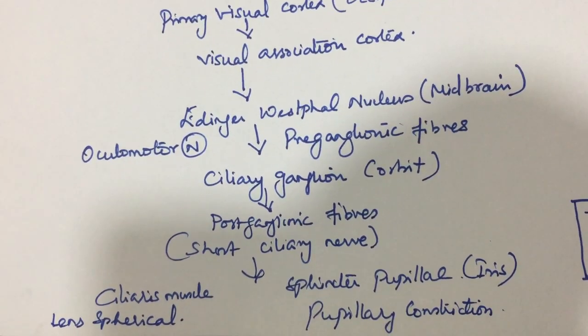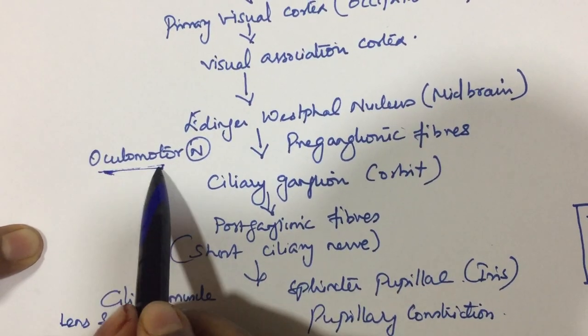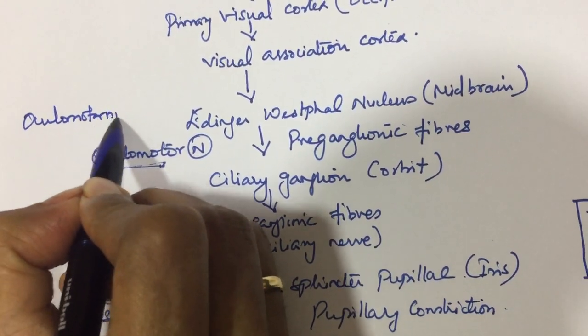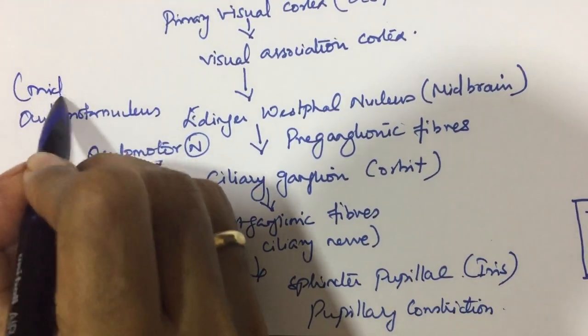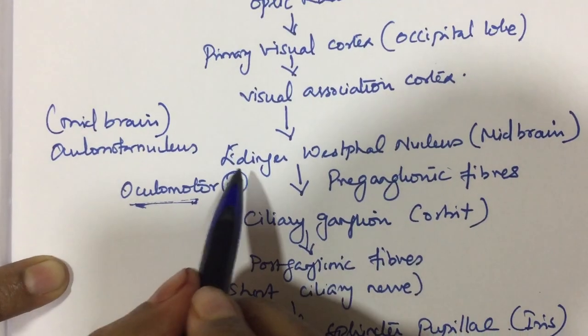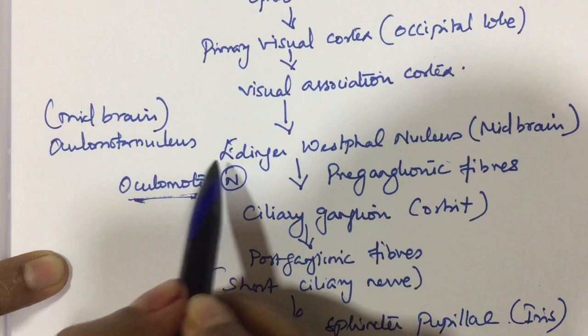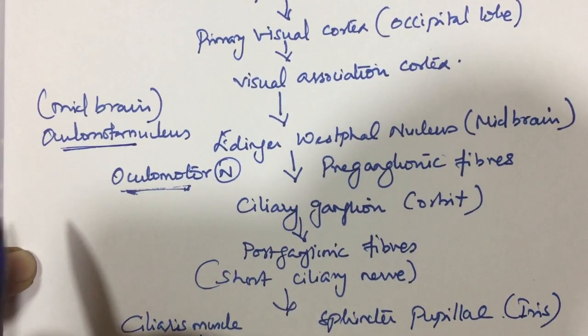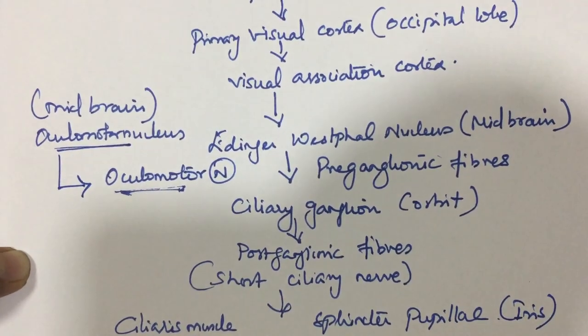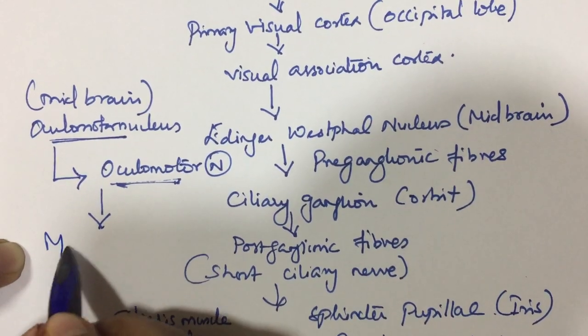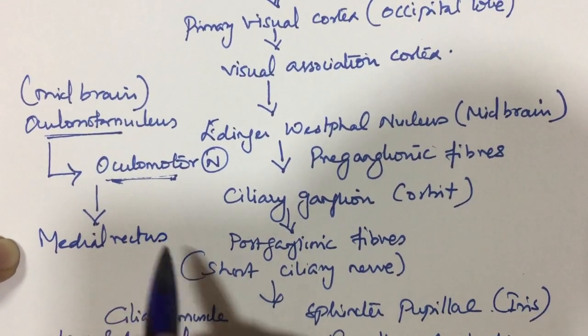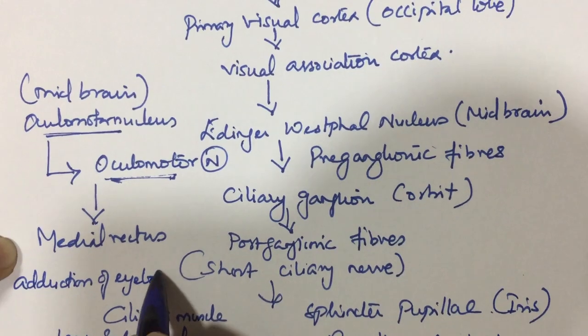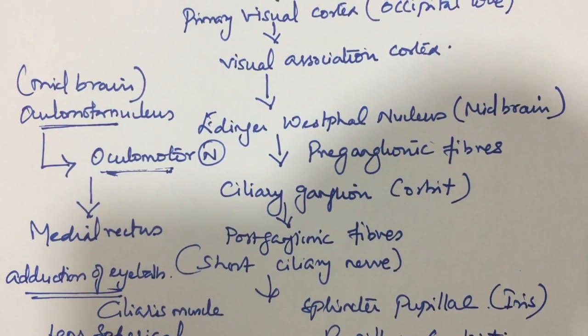Apart from these two, the oculomotor nerve arises from the oculomotor nucleus which is also present in the midbrain near to the Edinger-Westphal nucleus. It is ventral to the Edinger-Westphal nucleus. The information from the oculomotor nucleus is passed via the oculomotor nerve to the medial rectus muscle and causes adduction of eyeballs. Adduction of eyeballs results in convergence of eyeballs.